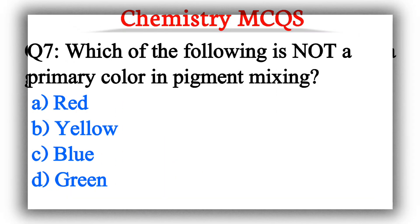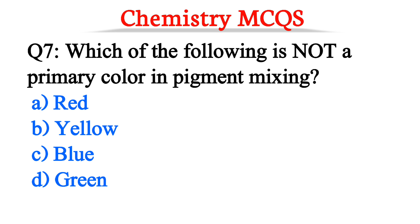Question number 7. Which of the following is not a primary color in pigment mixing? The correct option is option D, Green.